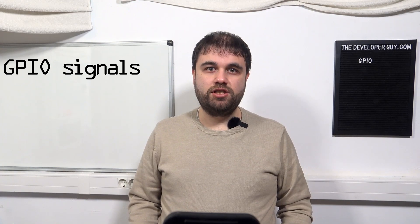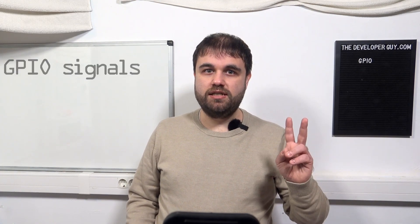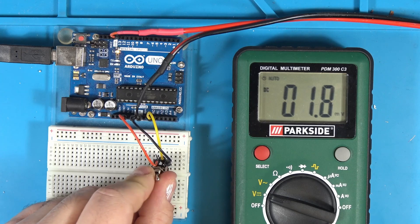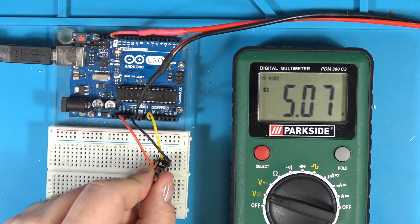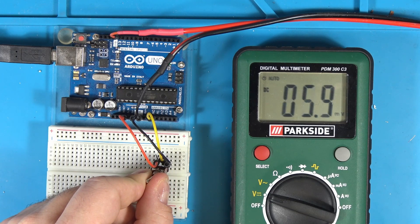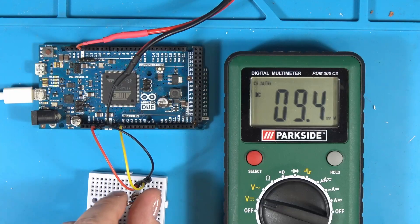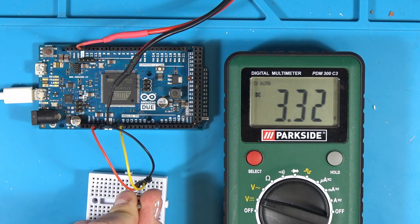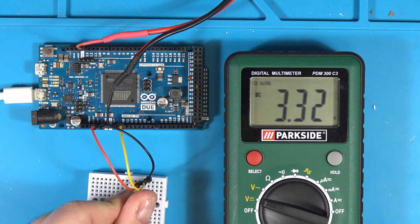GPIOs are digital interfaces and distinguish two signal states: high and low. Low is 0V or ground. High is the system's supply voltage, usually 5V or 3.3V. Surprisingly, many devices can be used with these simple signals — buttons, switches, relays — and most communication interfaces use binary signals.